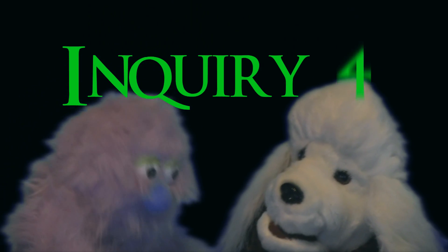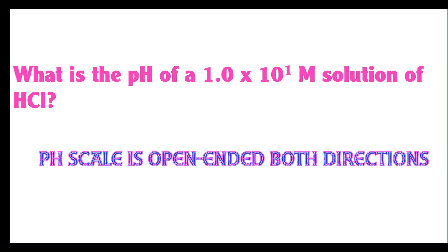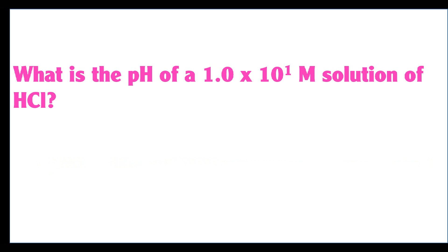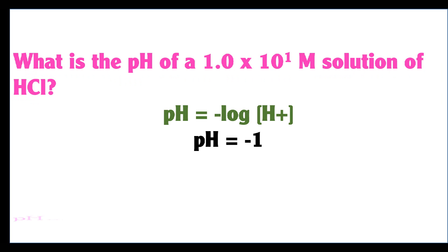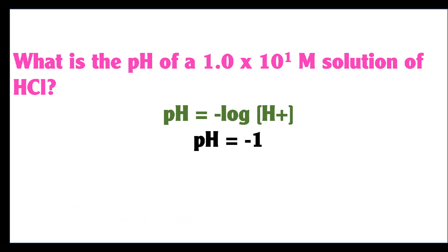Inquiry number four: the pH scale is an open-ended scale, meaning that you can have a pH greater than 14 or even less than 0, but they don't really apply in aqueous solutions. Since biochemistry is based upon aqueous solutions, that's why we don't discuss it below 0 or above 14. If you have a 1 times 10 to the 1 molar solution of hydrochloric acid, the pH is going to be a negative 1. So just know that it can exist.